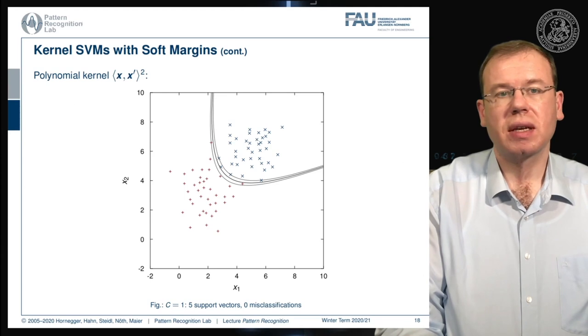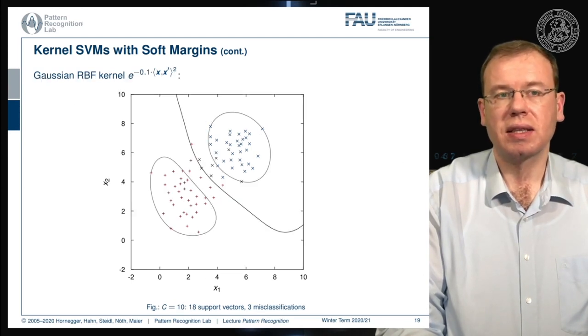Of course, we can also use other kernels like the Gaussian radial basis function kernel here. And here you can see now that we get a decision boundary. And our margins are essentially encircling the two classes here. So very interesting.